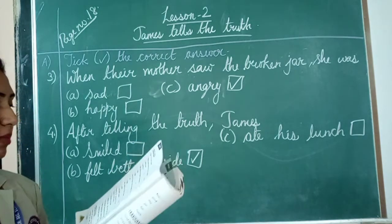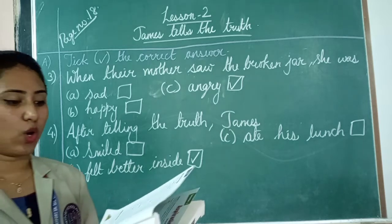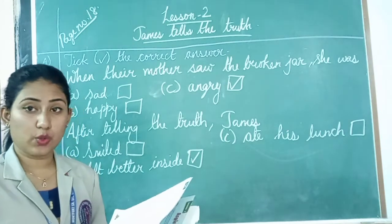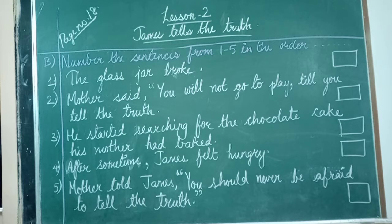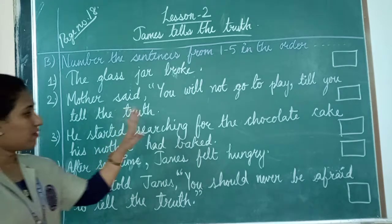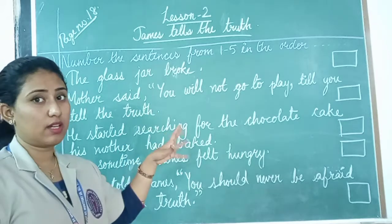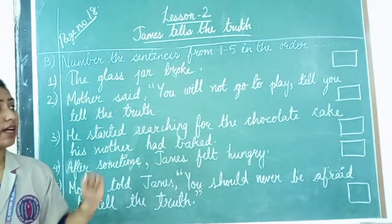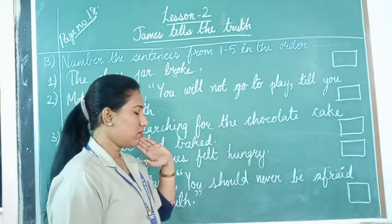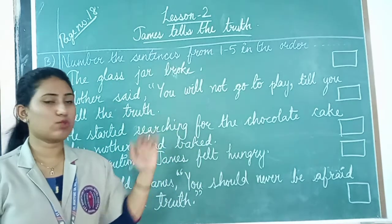Now we will move on to question number B: number the sentences from 1 to 5 in the order of the events as they happen in the story. You are given five lines from the chapter, but they are jumbled — not in order. You have to number them in the correct sequence, 1 to 5, in the order they appear in the story.